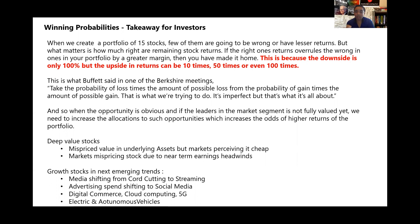This is what Warren Buffett said in one of the Berkshire meetings: take the probability of loss times the amount of possible loss from the probability of gain times the amount of possible gain. That is what we are trying to do — it's imperfect, but that's what it's all about. You're trying to increase your odds by riding on the winning ones, increasing your allocation towards them, and reducing and pruning frequently when you realize that certain investments were wrong — then just stay the course. That is how higher returns are made.